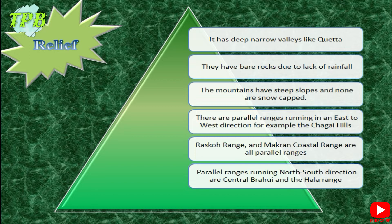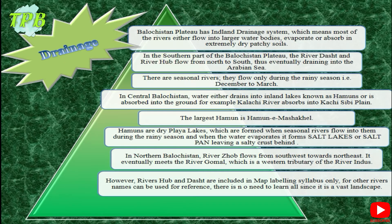Moving on to drainage — the Balochistan Plateau has an inland drainage system. It is important to understand that inland drainage means most rivers don't end up in a larger water body like the Arabian Sea. However, there are some seasonal rivers which do eventually join and fall into the Arabian Sea. In the inland drainage system, most rivers either flow into a larger water body, evaporate, or are absorbed into the extremely dry and patchy soils.